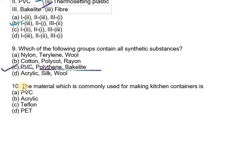Moving on to question number ten, it says the material which is commonly used for making kitchen containers is: PVC, acrylic, teflon, or PET. PET is a very familiar form of polyester.